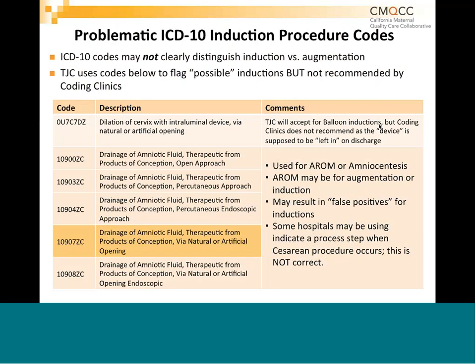I would suspect that if you see this code in obstetric patients, they're trying to tell you they're using a balloon, but it wouldn't be the correct code. I would double check that if you are reviewing cases and you see this code — I bet they're probably not following the perfect coding clinic guidance. The next set of codes is about drainage of amniotic fluid. Again, it's a very generic term. The highlighted code — 'drainage of amniotic fluid, therapeutic, from the products of conception, natural or artificial opening' — so the natural opening to do this is through the vagina and the cervix, meaning this should be artificial rupture of membranes. You sort of have to fill in the blanks in your own mind with the generic terms used in ICD-10.